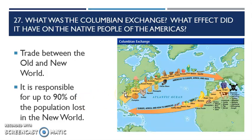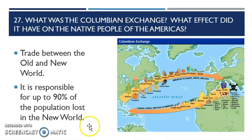Remember, tobacco is going to be the crop that really saves the colony of Jamestown. Now these goods go over to the old world. What the old world is going to send over here is a lot of meat products — cattle, sheep, pigs, and horses. These are things that they didn't have over here.